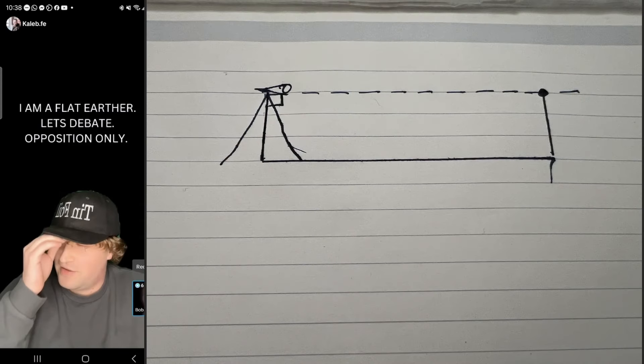Right off the bat, Caleb tries to challenge me to provide evidence of Earth curvature, which I of course have done. Then he asked me how I did it, so I gave him a very simple measurement of Earth curvature. In this case, if you have a level lake and you have two objects on either side of that lake,